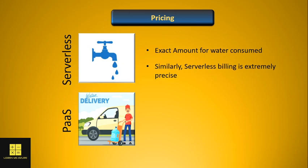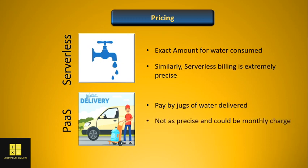People who use water from the delivery service also pay for the water delivered, but in this case you are charged by a per-jug model and not by actual consumption. Similarly, a platform as a service vendor charges for what their application uses, but it's not as precise as serverless. Sometimes you get monthly billing for their services as well. With platform as a service you can increase consumption and customize it, however this is based on advance information you provide and it is not responsive to increases in demand dynamically.